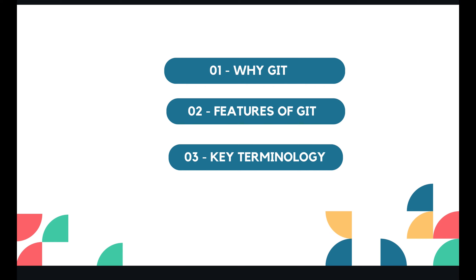Git is a version control system which keeps track of changes to code. Now let's discuss Git terminology. We mostly use the terms 'git' and 'git repo' or 'git repository.' A git repository contains files, history, and configuration managed by Git — it is a directory present on your local machine.